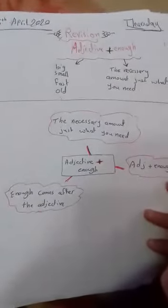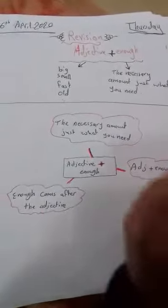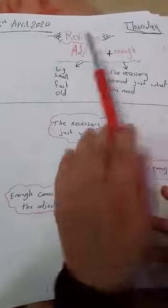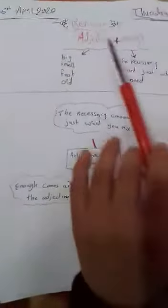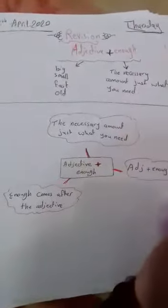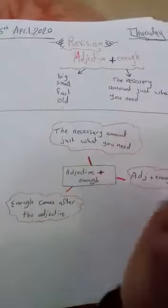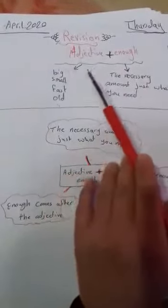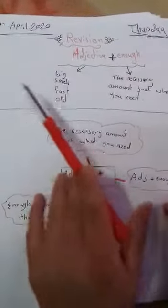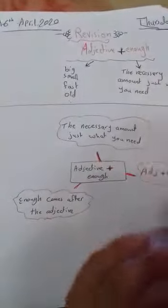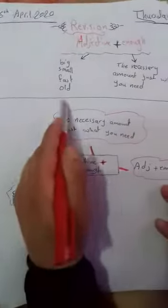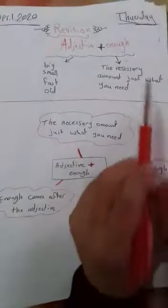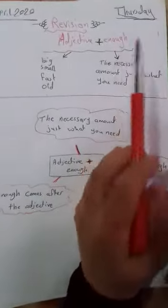Students, how are you? Today is Thursday and we have revision for grammar: adjective plus enough. This is for Unit 10. At first, what's the meaning of adjective? We can see, for example, big, small, fast, old, and lots of adjectives. What's the meaning of enough, or we use enough for what?